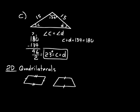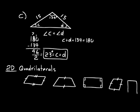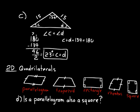A rectangle is like a parallelogram in that it has two pairs of parallel sides, but the difference is that all interior angles are right angles. A rhombus is also like a parallelogram, except all sides are the same length — represented by one tick mark on each side. A square is like a rhombus with all angles being right angles, so all sides are the same length and all angles are right angles.